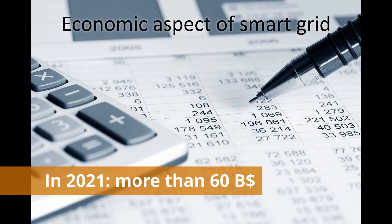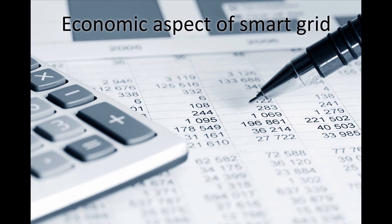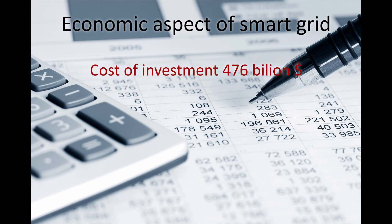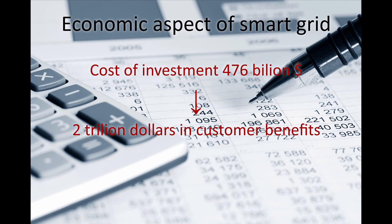By 2021, it will exceed at least 60 billion dollars. Given the success of smart grid in the US, the world market is expected to grow at a faster rate. A 2011 research concludes that investment in a US smart grid will cost up to 476 billion dollars over 20 years, but will provide up to 2 trillion dollars in customer benefits over that time.